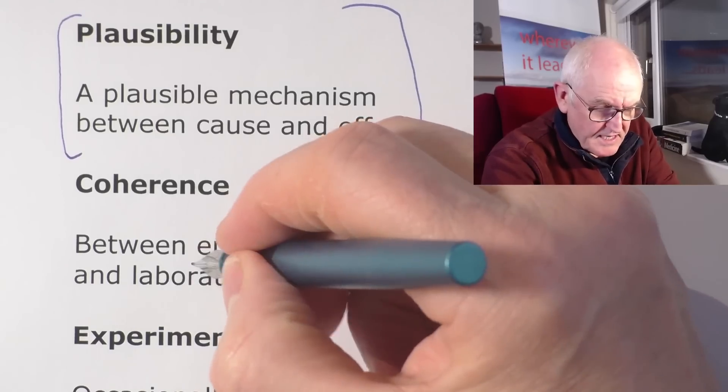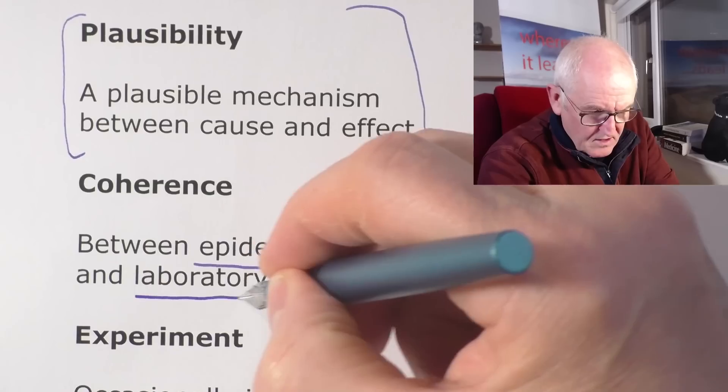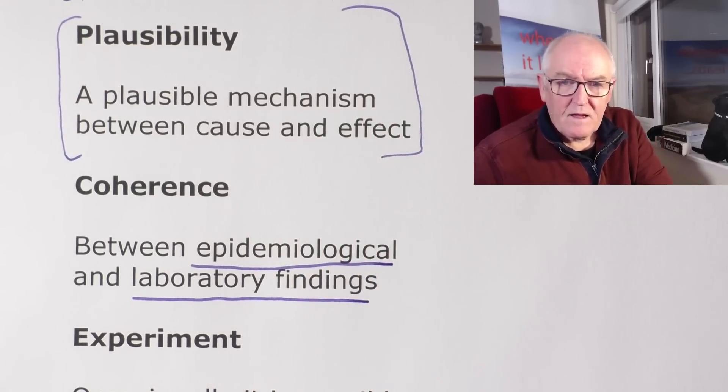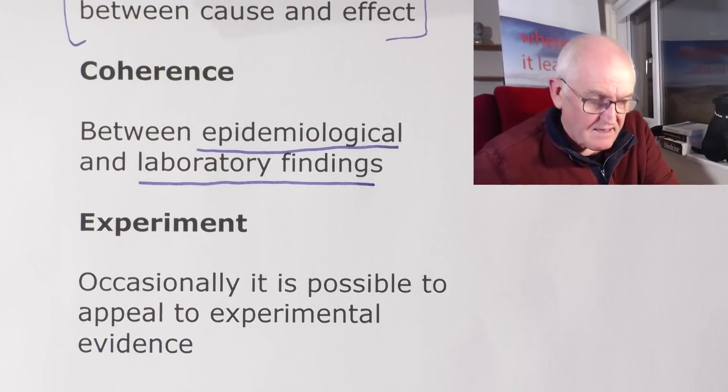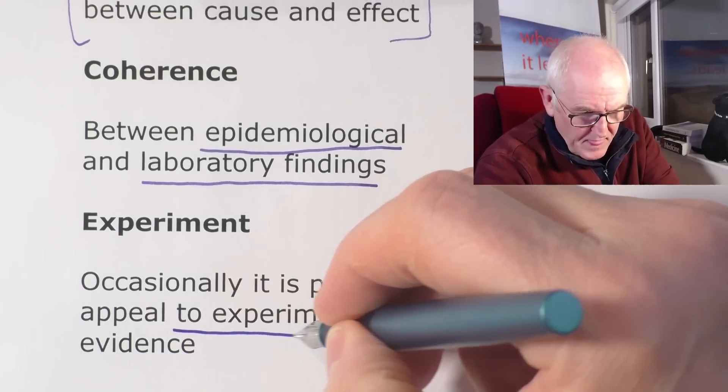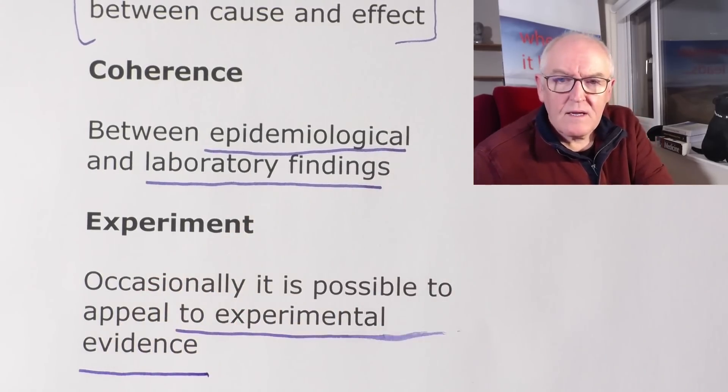Coherence between epidemiological findings and laboratory findings. Laboratory findings can often be done using animal studies — in fact, on this very channel we've talked about animal studies and, for example, inflammatory changes that occur. Sometimes it's possible to do experiments, and occasionally it's possible to appeal to experimental evidence. Experiments have been done on the population, and indeed you could argue that experiments are being done on the population as we speak. Could we get data from these contrived — or, one could argue, natural — experiments? Why isn't this being done and collated with all these other Bradford Hill criteria?